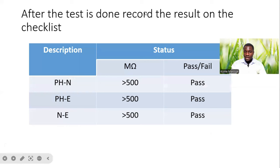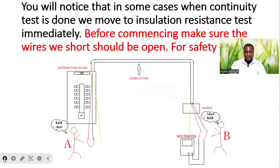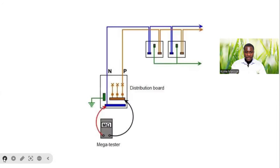After the test is carried out, we record our values and put the status — pass or fail. In this case, the pass result is 500 megaohms or greater than 500 megaohms between phase and neutral, between phase and earth, and between neutral and earth.